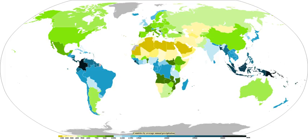A concept used in precipitation measurement is the hydrometeor. Any particulates of liquid or solid water in the atmosphere are known as hydrometeors. Formations due to condensation, such as clouds, haze, fog, and mist, are composed of hydrometeors. All precipitation types are made up of hydrometeors by definition, including virga, which is precipitation that evaporates before reaching the ground. Particles blown from the Earth's surface by wind, such as blowing snow and blowing sea spray, are also hydrometeors.